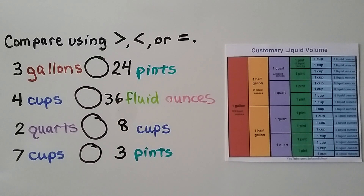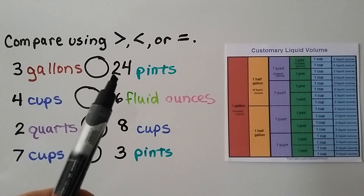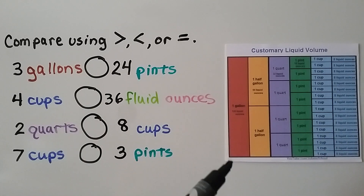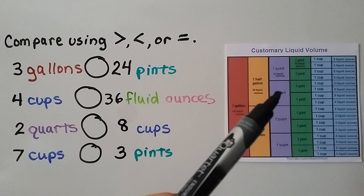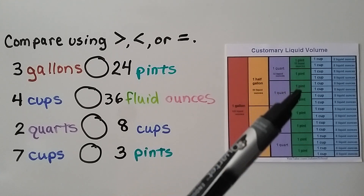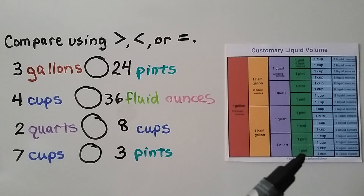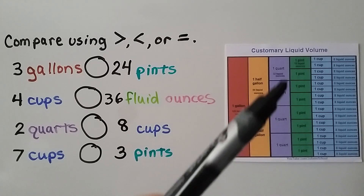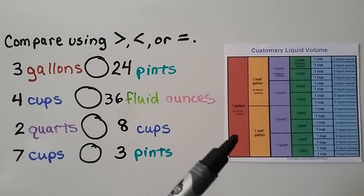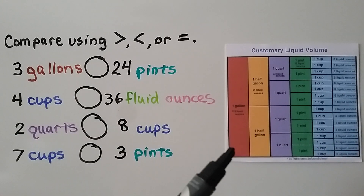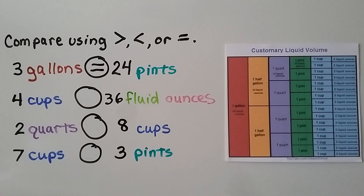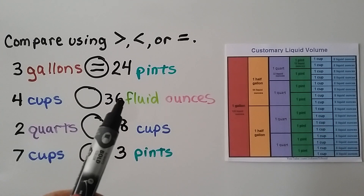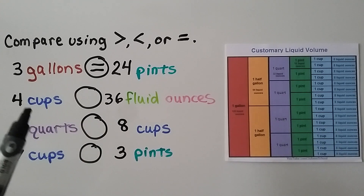Now let's compare using greater than, less than, or equal to symbols. Three gallons compared to 24 pints: looking at the chart, it takes eight pints to equal one gallon. So for three gallons we do eight times three, which is 24. So 24 pints is equal to three gallons.